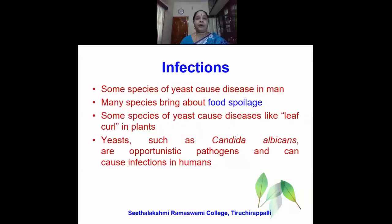Yeast also produces infections. Some species of yeast cause diseases in man. Many species bring about food spoilage. Some species of yeast cause diseases like leaf curl in plants. Yeast such as Candida albicans are opportunistic pathogens and can cause infections in humans.